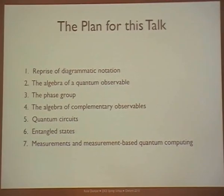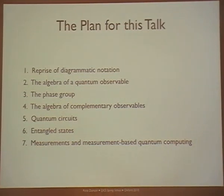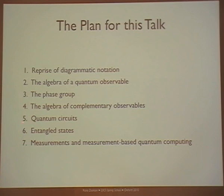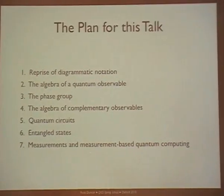Here is a rough outline of what I'm going to talk about. Since Monday morning seems like a long time ago, I'll remind you of the diagrammatic notation that Bob introduced, with some extra things we're going to need. I'll describe the structure you get from one quantum observable — this is a follow-on from what Jamie was saying at the end of his talk yesterday. Then I'll discuss the phase group, which arises from this structure, and what happens when we have two complementary observables and how these two algebras interact. After the theory, we'll do some applications and show how you use these in quantum circuits, graph states, and measurement-based quantum computing.